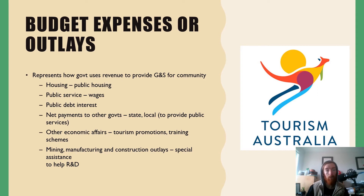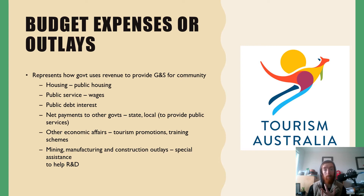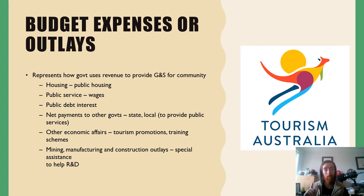Net payments to other governments — state and local — provide public services by giving state governments the funding they need. Other economic affairs include tourism campaigns and training schemes; tourism campaigns will be massive after this pandemic as we pump domestic tourism back up once state borders open. Lastly, there are outlays for mining, manufacturing, and construction — special assistance for research and development.